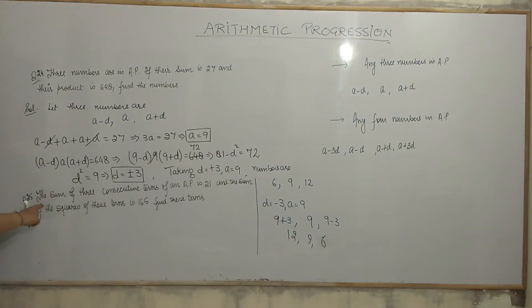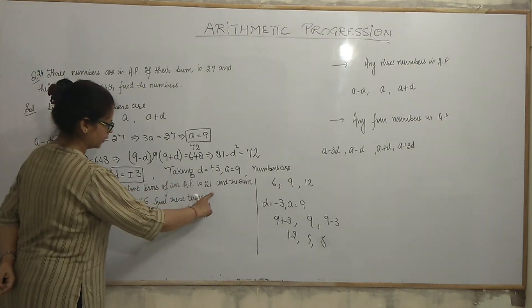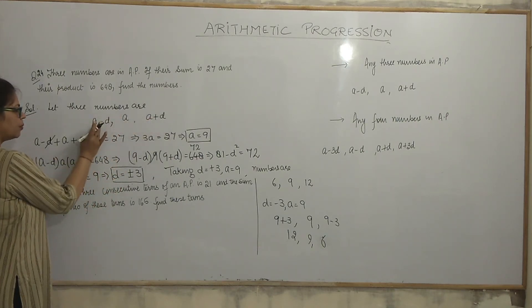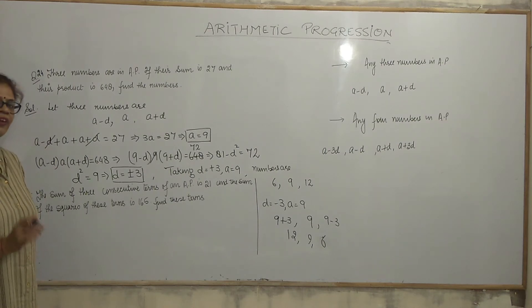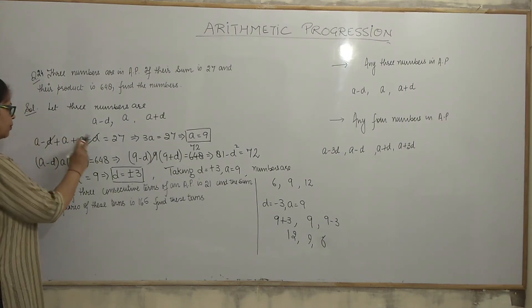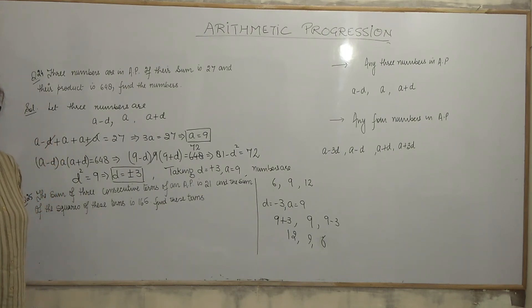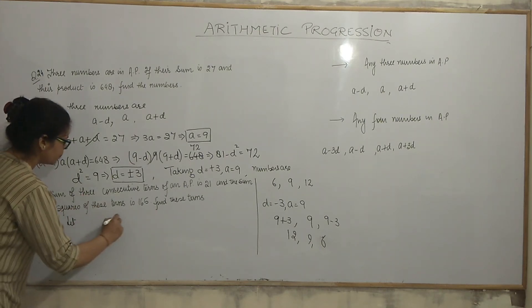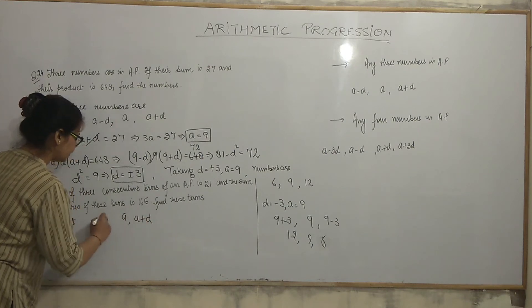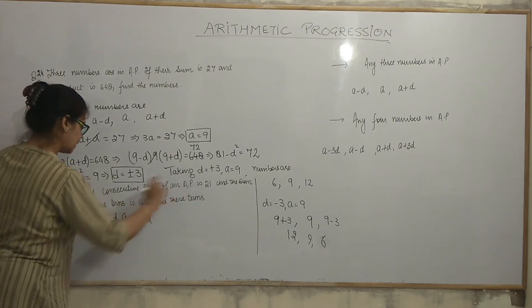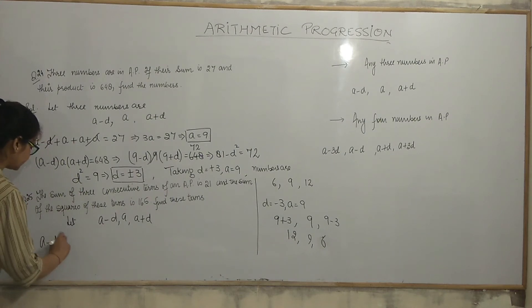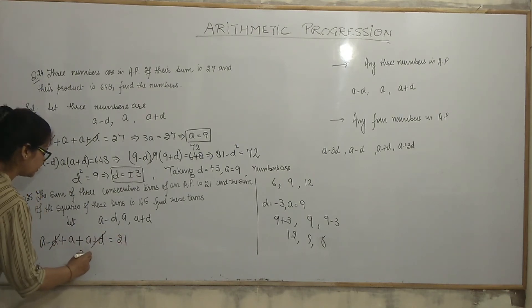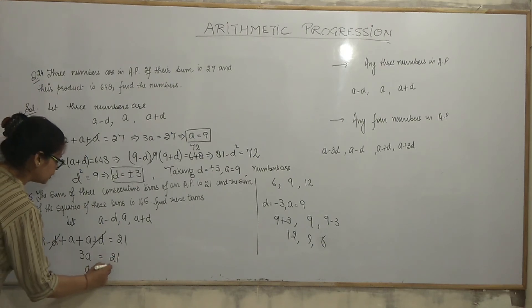The sum of 3 consecutive terms of an AP is 21. Whenever you are given sum, always take a minus d, a, a plus d. Why? So, when we sum up 3 numbers, one variable will automatically be eliminated. So, let numbers are again a minus d, a, a plus d. And, sum is 21. a minus d plus a plus a plus d is equal to 21. d and d gets cancelled out. 3a is equal to 21. a is equal to 7.